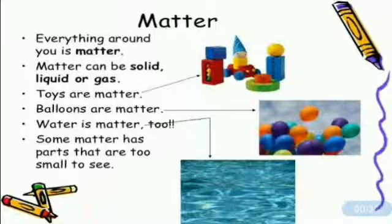Some matter has parts that are too small to be seen. So what is matter? Anything that has mass, occupies space and can be perceived by our senses is called matter.